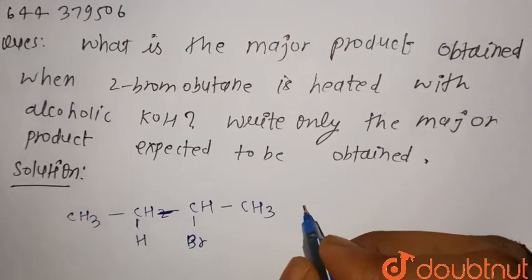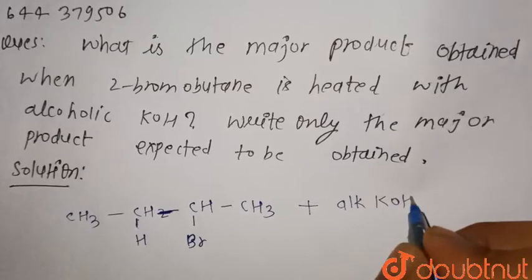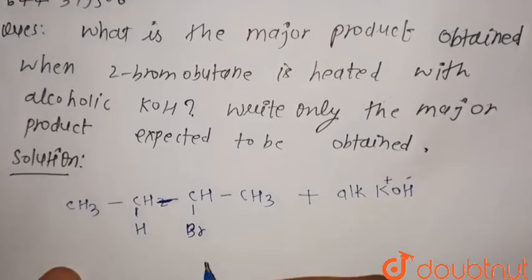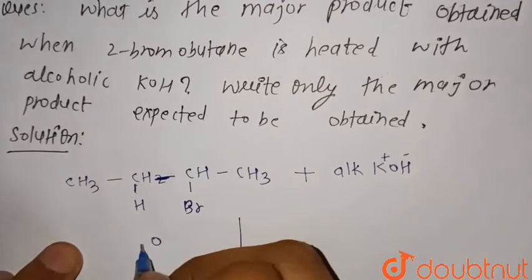When reacted with alcoholic KOH, that is K+ OH-, we know this is a dehydrohalogenation reaction.